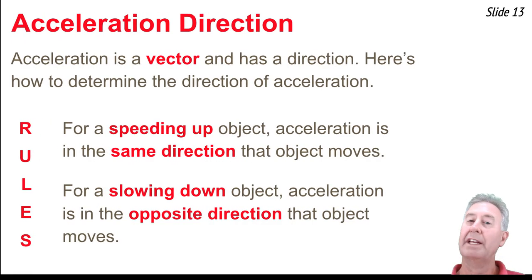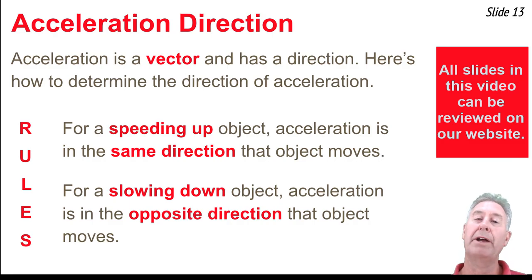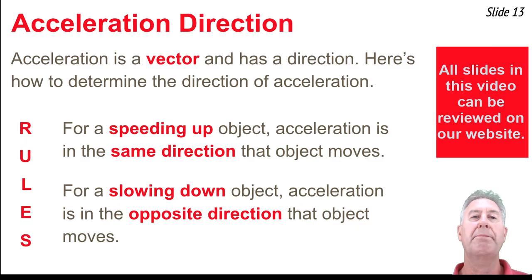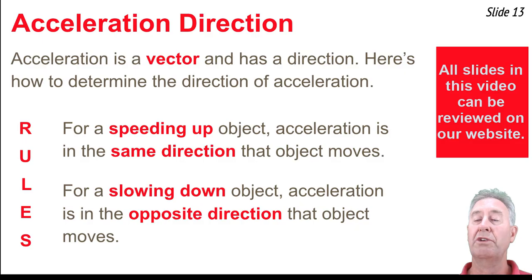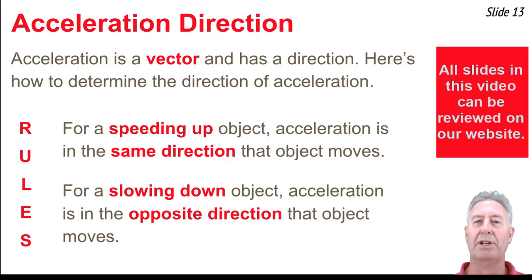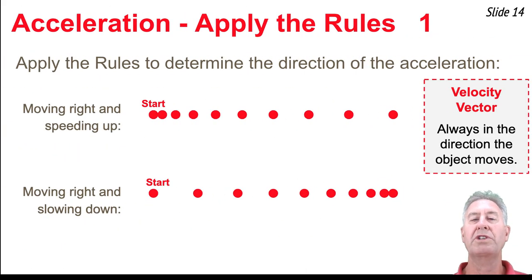Acceleration is a vector — it has both a magnitude and a direction. To find the direction, you need two rules. The speeding up rule: for a speeding up object, acceleration is always in the same direction the object moves. The slowing down rule: for a slowing down object, acceleration is in the opposite direction the object is moving.